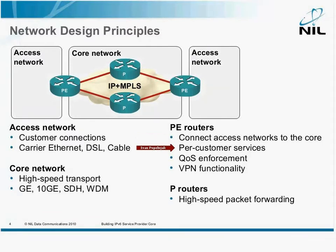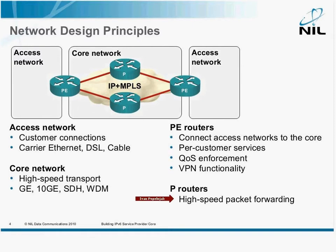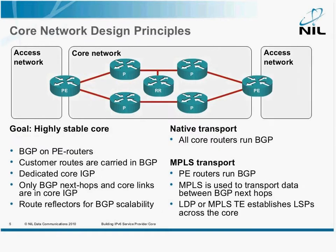On the PE routers, you implement per-customer services and enforce QoS. Sometimes you implement VPN functionality. On the other hand, in the core you have the P routers, which should do a single thing: high-speed packet forwarding. The primary goal you should have in the core network design is to make the core highly stable.